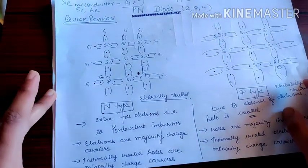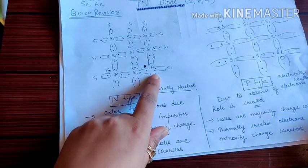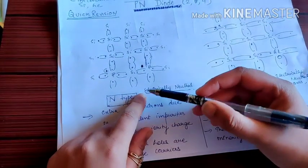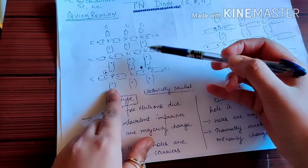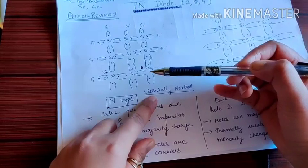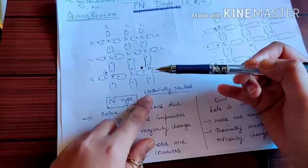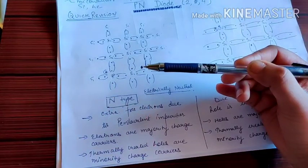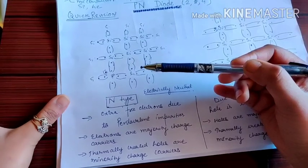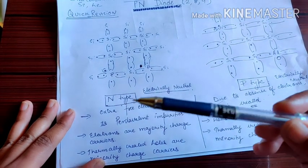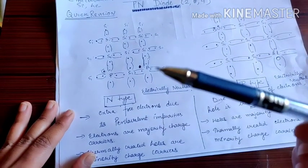In N-type, we add a pentavalent impurity atom — we add phosphorus. The basic lattice structure remains the same and we replace one silicon atom with phosphorus. In phosphorus we have 5 electrons: 1, 2, 3, 4, and 1 extra — unbonded. So it has more free electrons. Therefore, in N-type we have extra free electrons because pentavalent impurity is added.